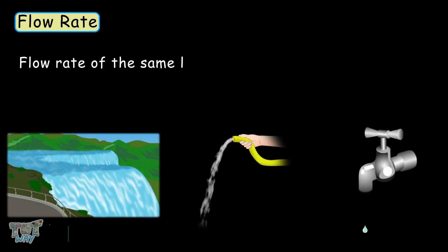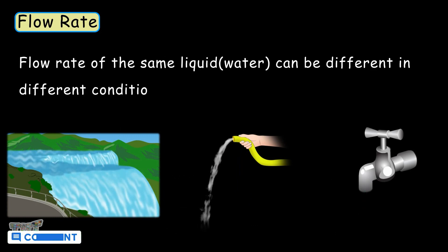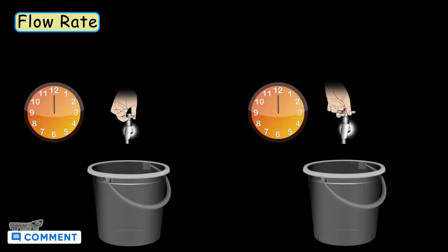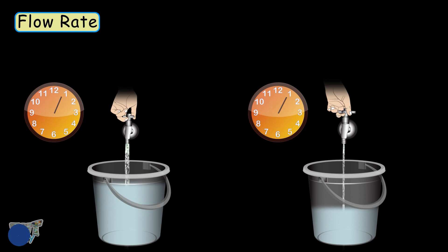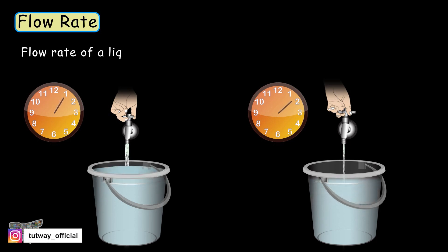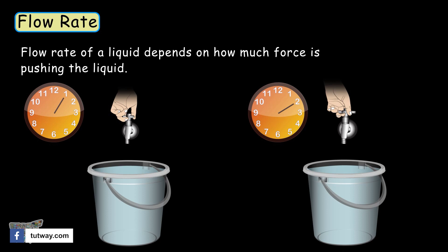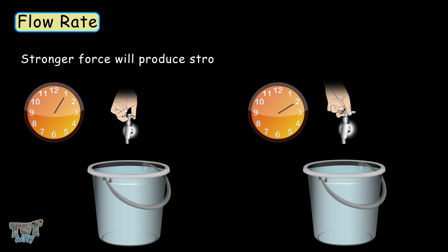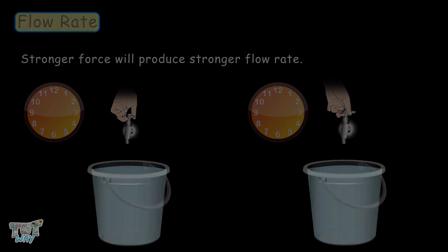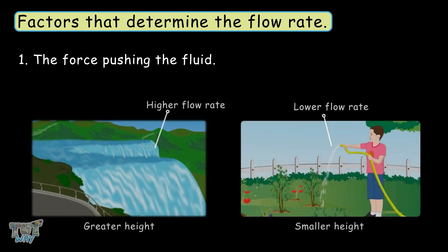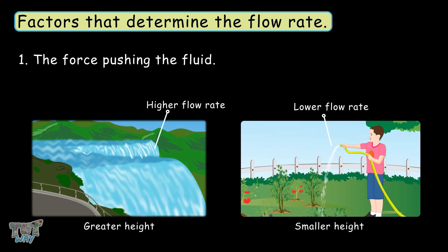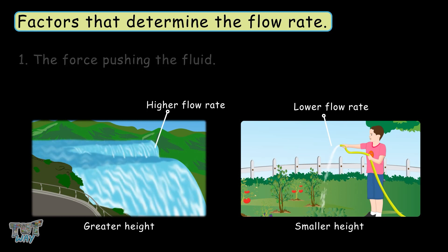Water can be different in different conditions. For example, water from one tap may fill the bucket in five minutes, and water from another tap may fill the same bucket in only ten minutes. Flow rate of liquid depends on how much force is pushing the liquid. Stronger force will produce a stronger flow rate. The greater the height from which the fluid is flowing, the greater force the liquid will experience, and thus the greater the flow rate will be.